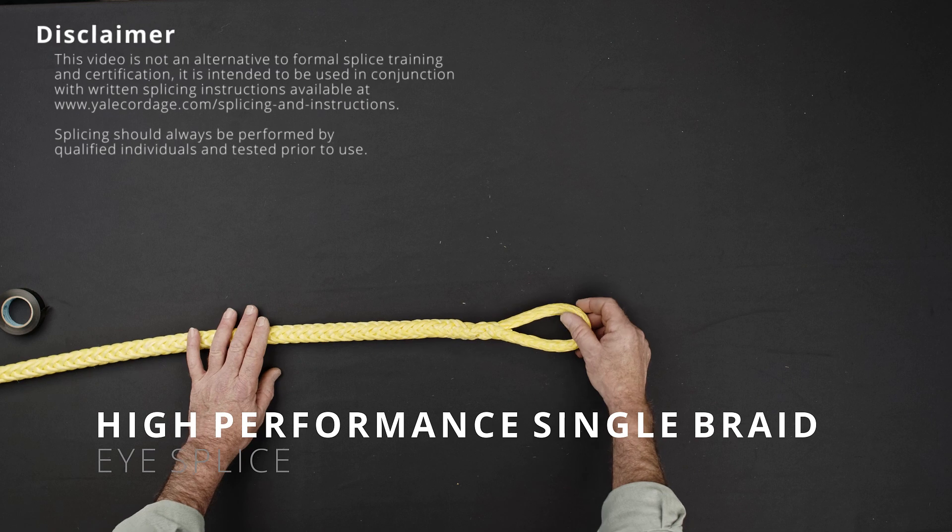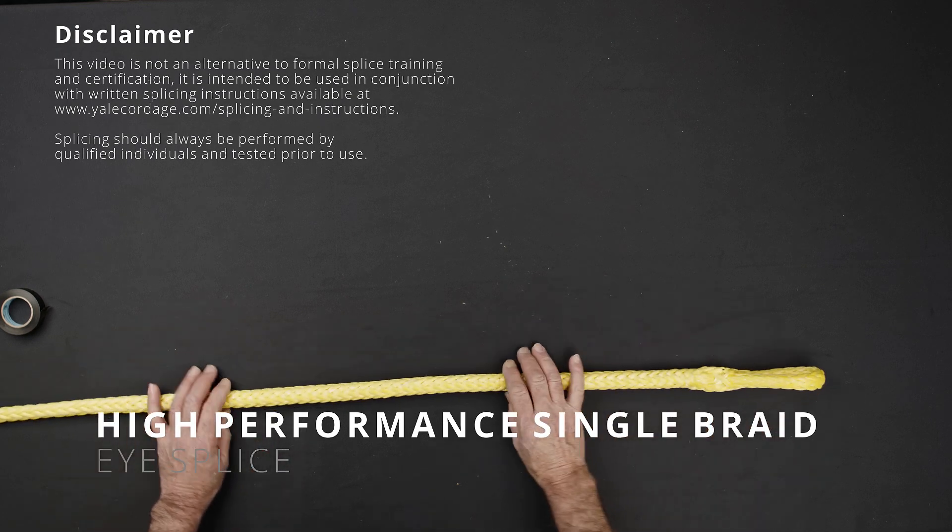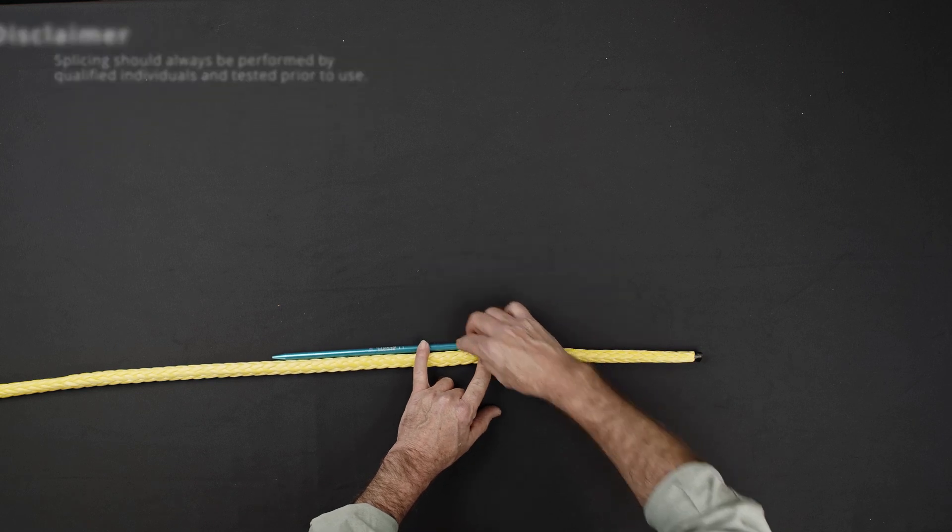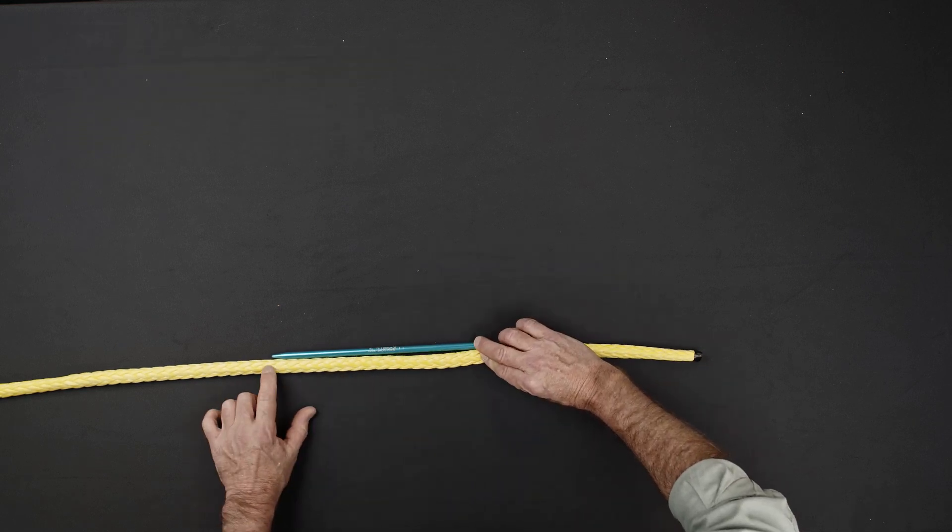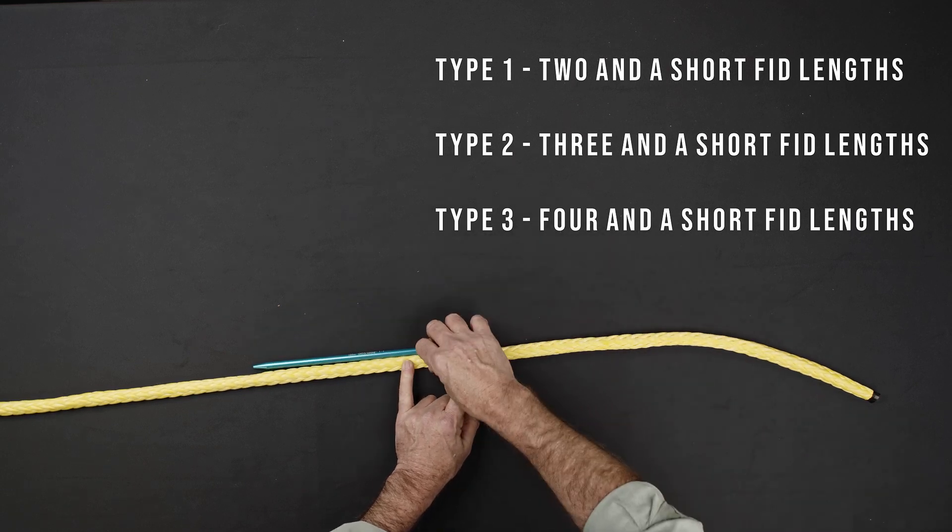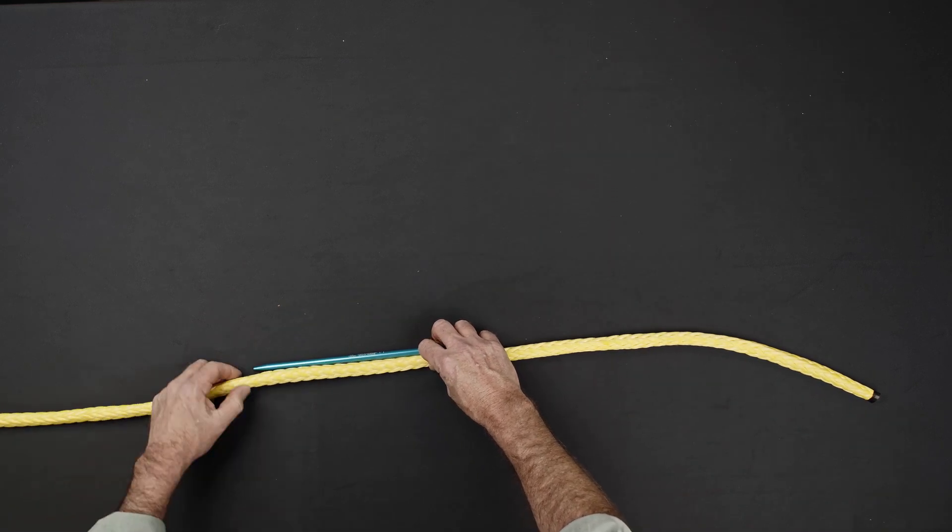This video covers the eye splice procedure for Yale Cordage High Performance Single Braids. Using an appropriately sized fit, make a first eye mark in accordance with the rope type. This video shows type 2 products with the first eye mark made 3 and 1 short fit lengths from the end of the rope.